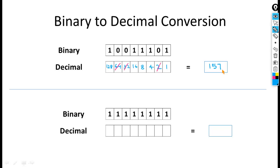Now the second example: this binary number is given and we have to convert it into decimal. The method remains the same. We start from 1 and in each subsequent box we double the previous value: 1, 2, 4, 8, 16, 32, 64, and 128. We have to add all these values because there is no 0, so no values are crossed out.